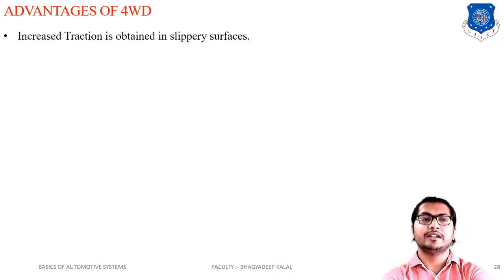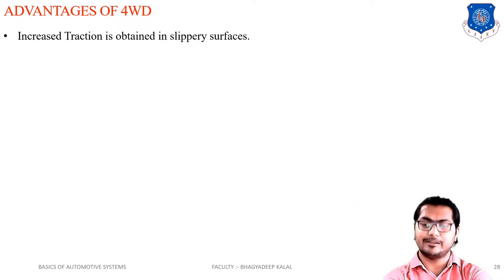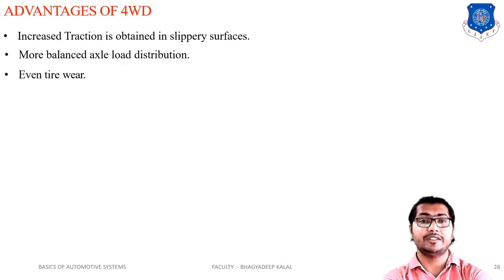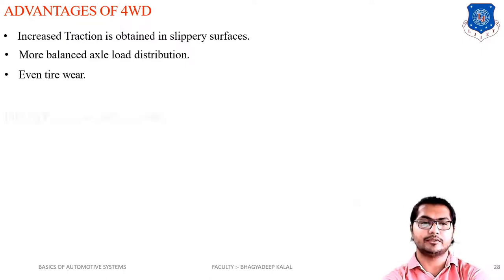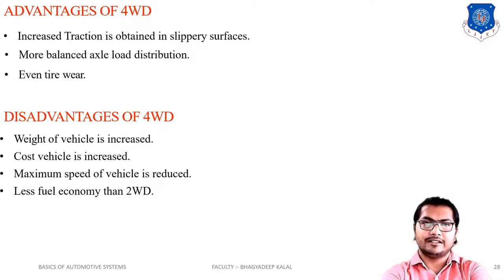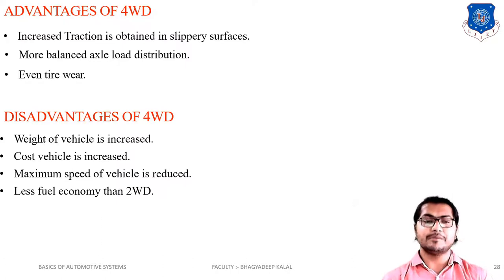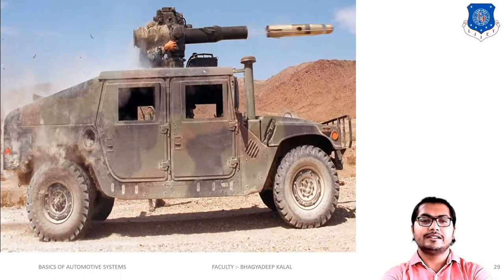Advantages of four-wheel drive: Increased traction on slippery surfaces, more balanced axle load distribution since load is evenly distributed, and even tyre wear across all wheels. Disadvantages of four-wheel drive: Weight of the vehicle increases because transfer cases and propeller shafts are used for both front and rear. Cost of vehicle increases due to more components. Maximum speed is reduced, and fuel economy is less than two-wheel drive.